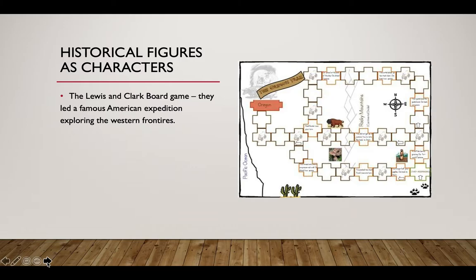Here's an example of historical events put into a board game — the Lewis and Clark board game. Lewis and Clark were famous American explorers who wanted to find out the landscape of America out to Oregon, because at the time very few people had been out there. They and Sacagawea went out on a number of journeys, and this is represented in the game. It's kind of asking: how do you get from Washington DC to Oregon and explore the Western frontier? We now know this is a colonial narrative, but interesting as a structure nonetheless.